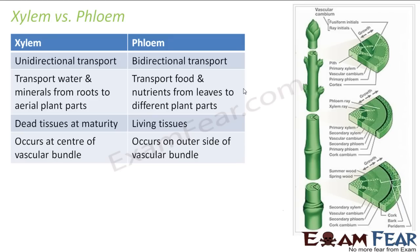Let us quickly distinguish between xylem and phloem. In xylem, we have unidirectional transport — that is, transport is only in one direction, from downwards to upwards. But in phloem, it is bidirectional transport, because from leaves it has to reach the lower branches as well as the upper branches.